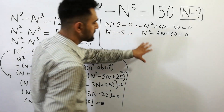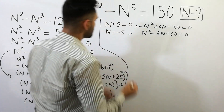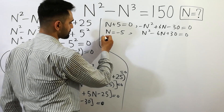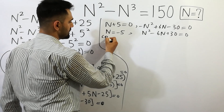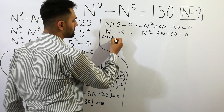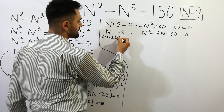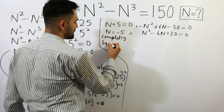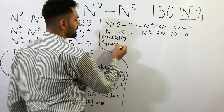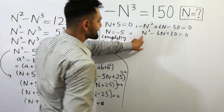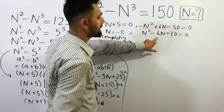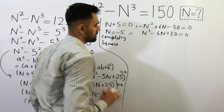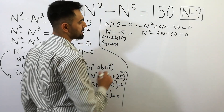Now apply here the method of completing the square. Completing the square method. I am going to apply it on n squared minus 6n plus 30 equals to 0. Very easy method.